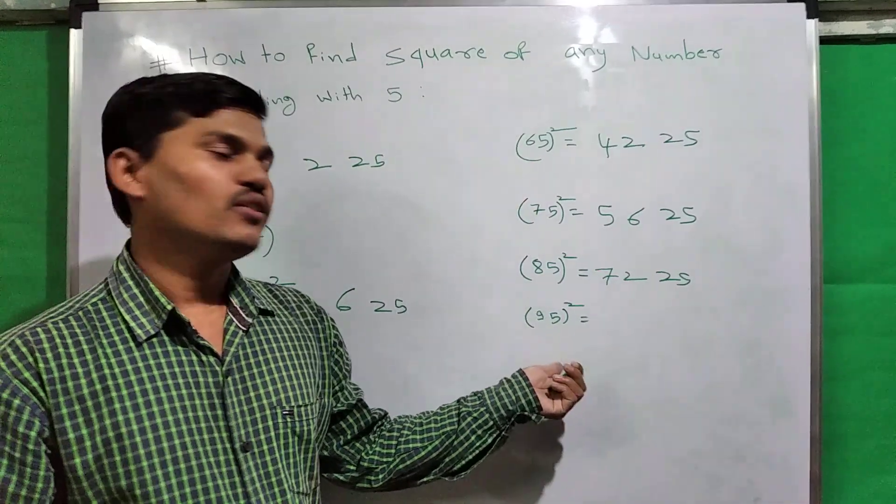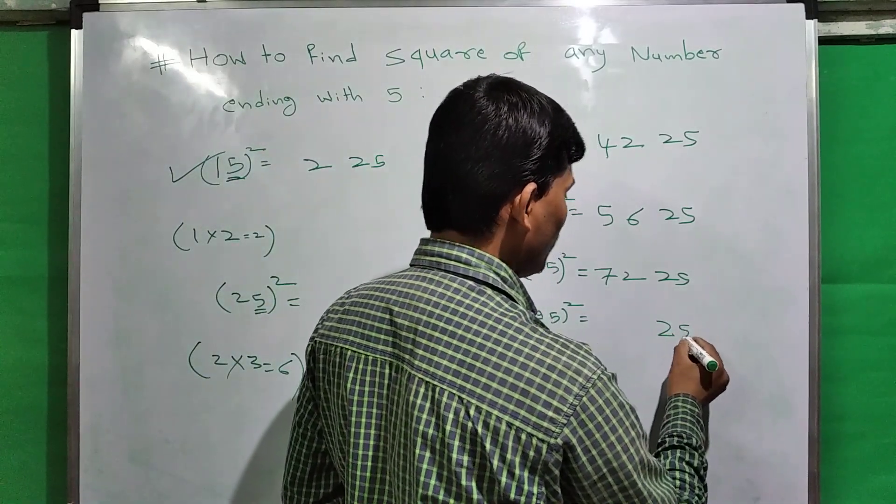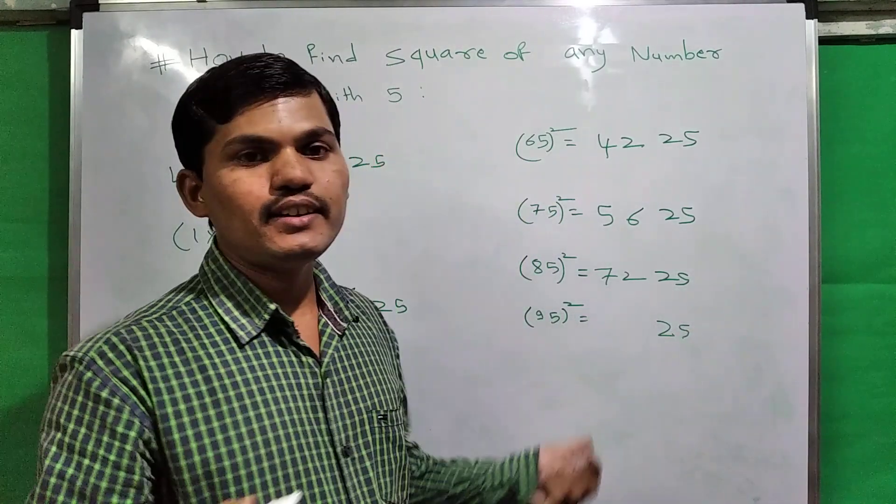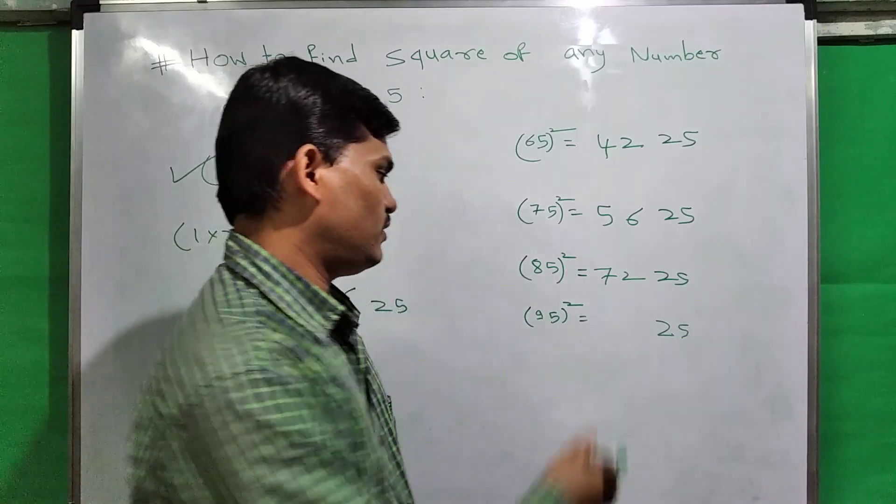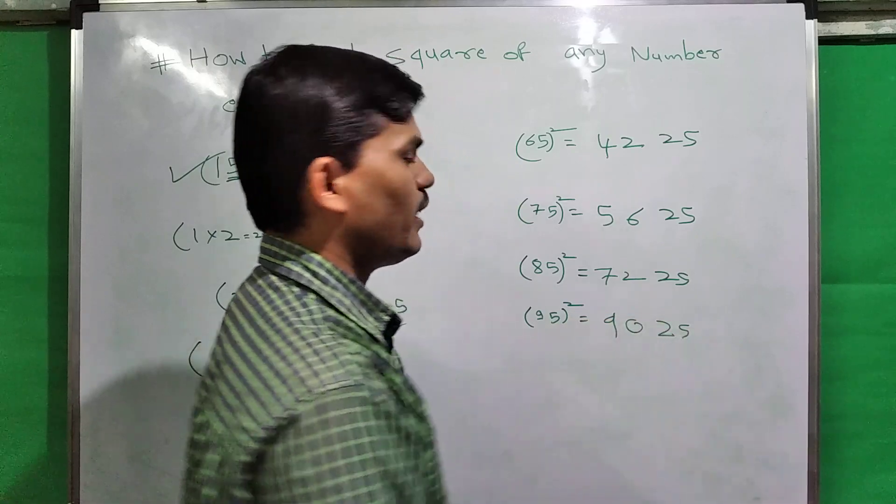Here is 95. Here again 5 square. Write down 5 square: 25. And the next number of 9 is 10. 9 times 10 is 90. So write down here: 9025. This is the square of 95.